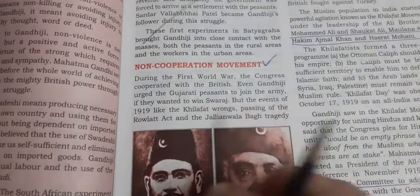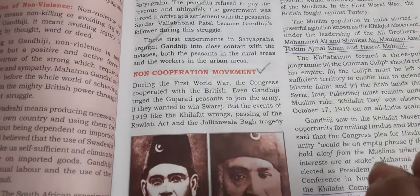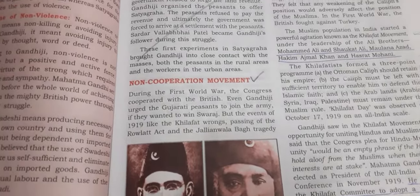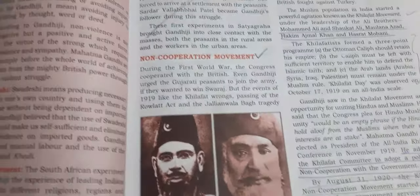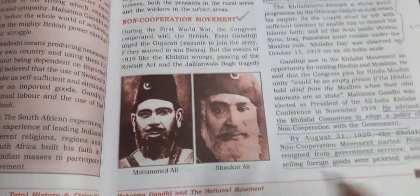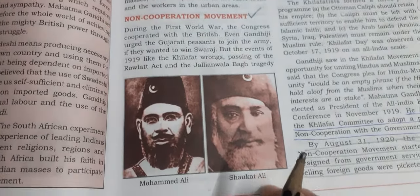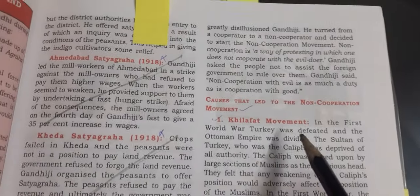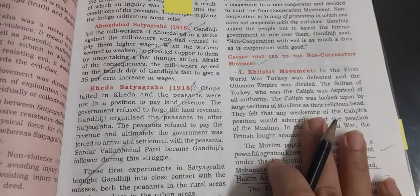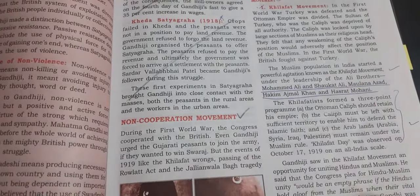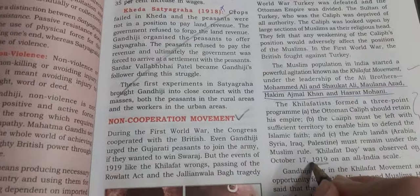The Non-Cooperation Movement is the very first mass movement started by Gandhiji and is very important. Focus on its dates, causes, and effects. Recognize the picture of Muhammad Ali and Shaukat Ali — the brothers behind the Khilafat Movement, which was the first main cause of the Non-Cooperation Movement. All details of the Khilafat Movement, including the year it started, are in the syllabus.